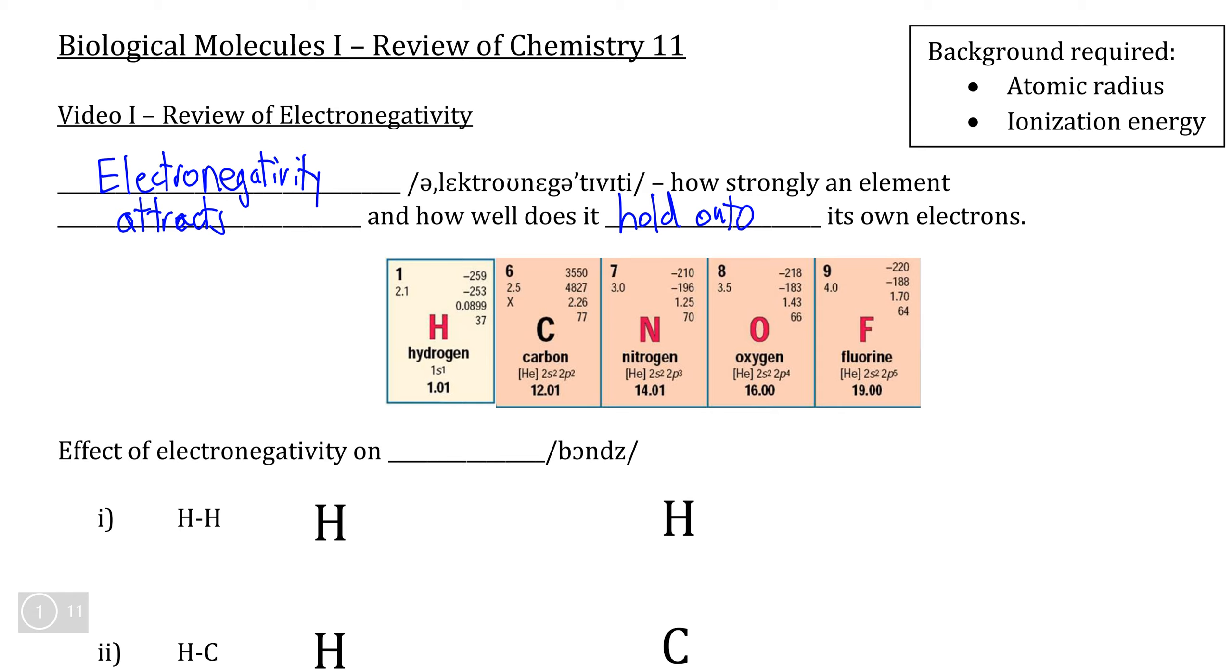We can measure electronegativity by looking at what we call an element's electronegativity constant, which is found here on the periodic table, usually right below the atomic number. So carbon's electronegativity constant is 2.5, nitrogen's is 3.0, oxygen's is 3.5, and fluorine with the highest electronegativity on the whole periodic table with an electronegativity constant of 4.0.